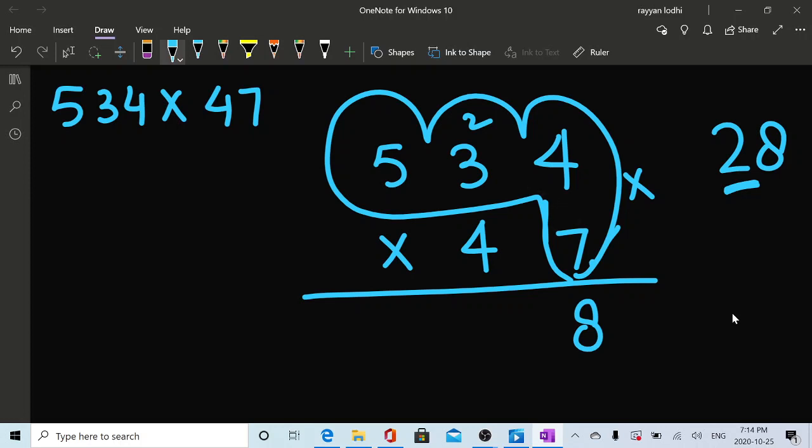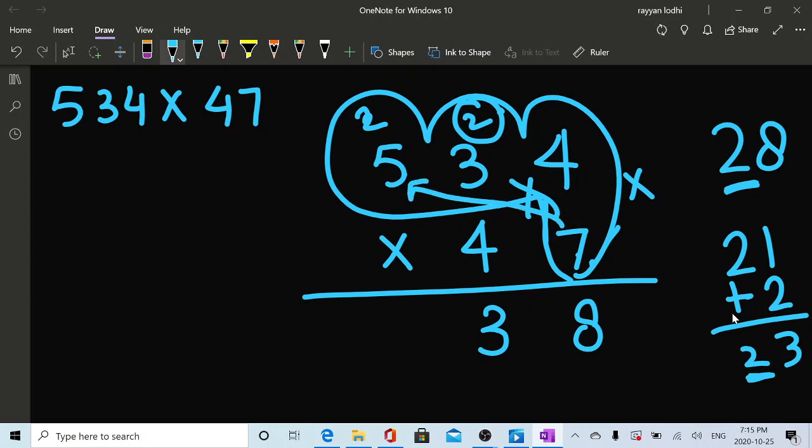Then seven times three. Seven times three is 21. Don't forget this two. Once we have 21, we need to add this two in this 20, giving you 23. How will we write here? We will write three here. And this two of 23 goes on top of this five. Now seven times five, this seven is getting multiplied by this five. Seven times five is 35. Plus two. Remember to add this two which gives you 37.